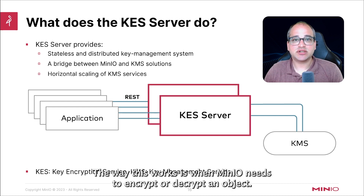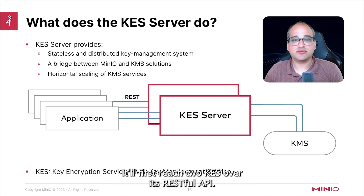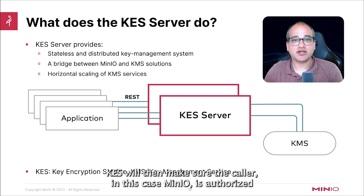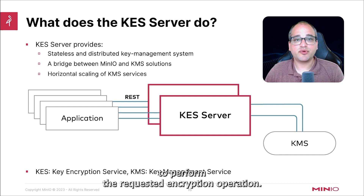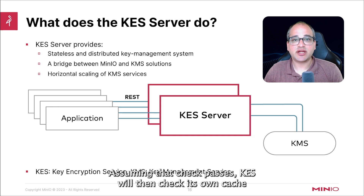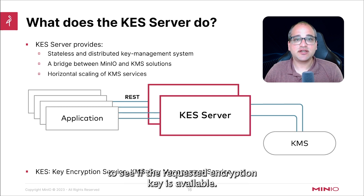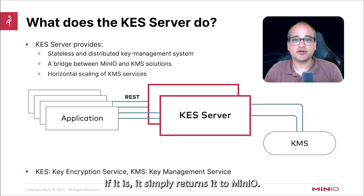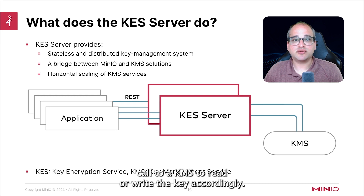The way this works is when MinIO needs to encrypt or decrypt an object, it'll first reach out to KES over its RESTful API. KES will then make sure the caller, in this case MinIO, is authorized to perform the requested encryption operation. Assuming that check passes, KES will check its own cache to see if the requested encryption key is available. If it is, it simply returns it to MinIO. If not, it makes an upstream call to a KMS to read or write the key accordingly.